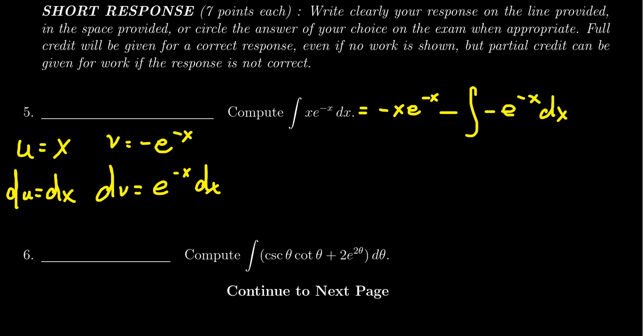So then we're going to evaluate this integral. It is a double negative, so you get negative x e to the negative x plus the integral e to the negative x dx. But this integral we've already computed the antiderivative of. It's just going to be negative e to the negative x.